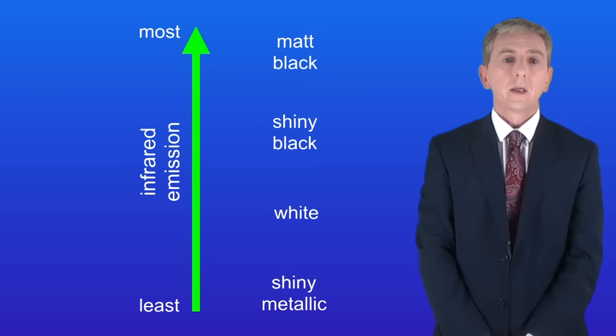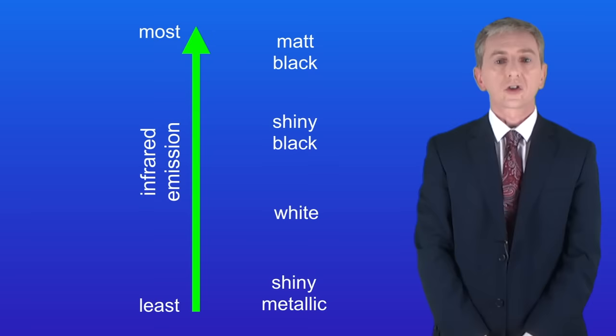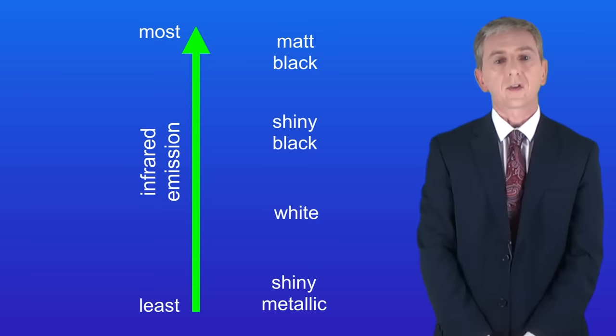What we find is that the matte black surface emits the most infrared radiation. This is followed by the shiny black surface and then the white surface. Finally, the shiny metallic surface emits the least infrared radiation.